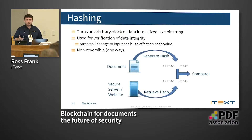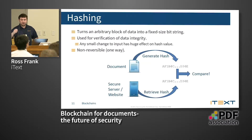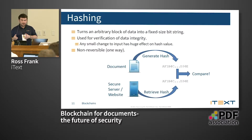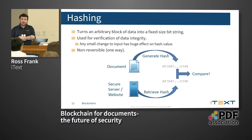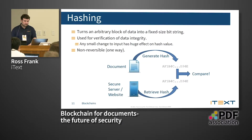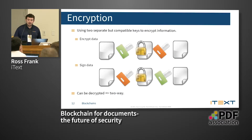Hashing is turning arbitrary blocks of data into a fixed-size bit string. It's used for verification of data integrity because any small change drastically changes the hash. It's a fingerprint for the document, but it's one-way — you can't go from a hash to the document; you go from the document to the hash. Using this in blockchain is important because the hash is there to identify the document, but the actual data and any personal information isn't stored in the blockchain.